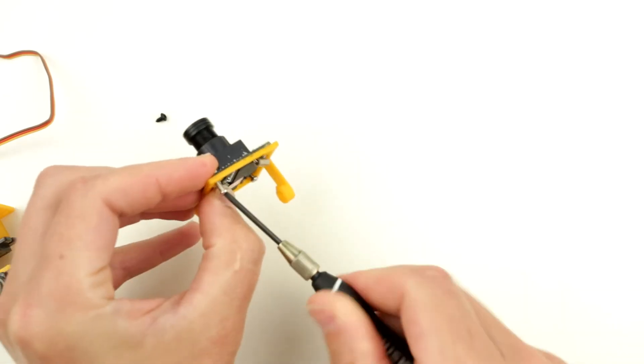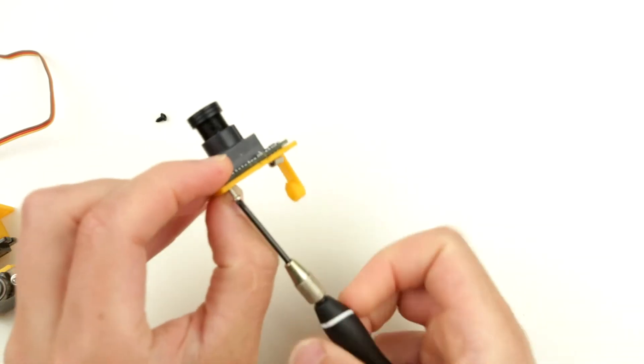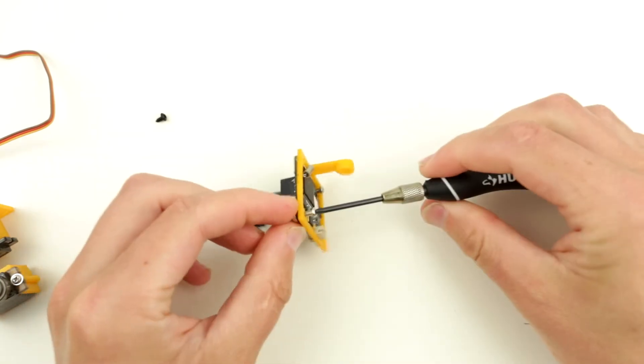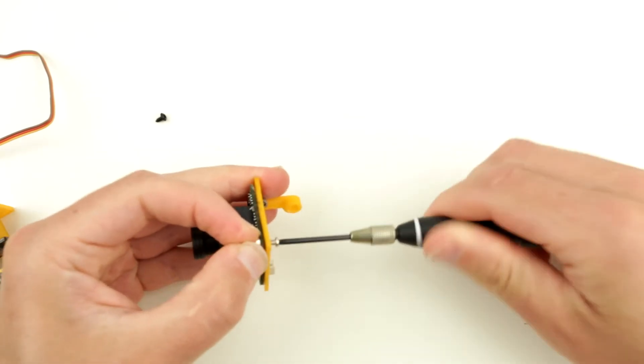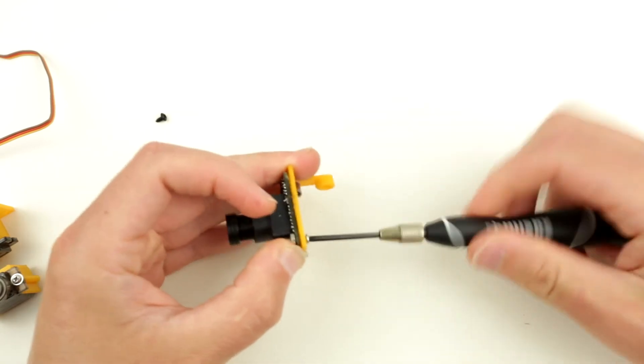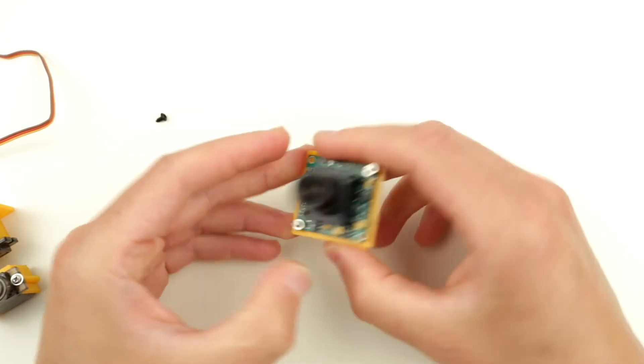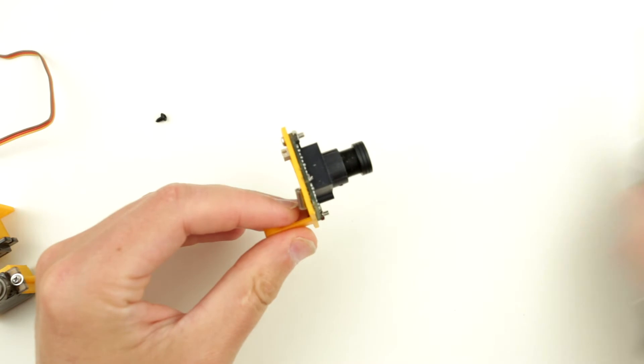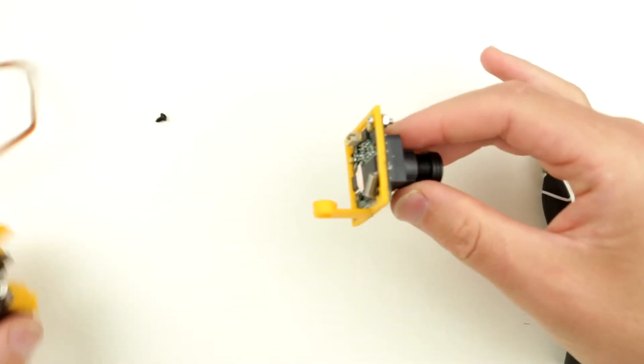Ideally, I could have designed this little frame for the camera in such a way that it would just snap in and then have to screw anything. It'd be easier. But I think screws are better. Alright. So camera module is secured.